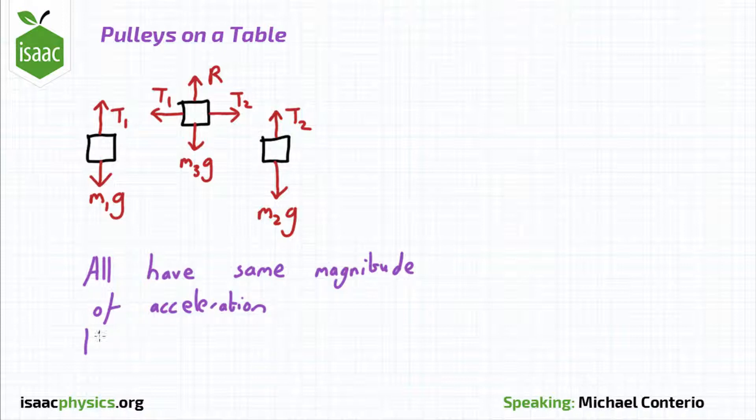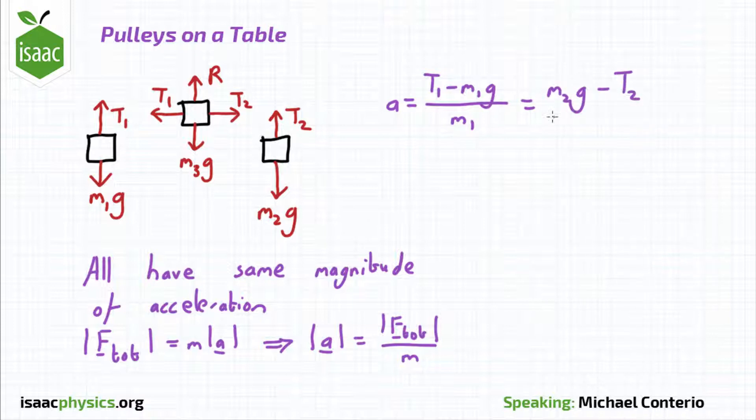So if we take Newton's second law, force equals mass times acceleration, and just take the magnitude of the resultant force and the magnitude of the final acceleration and rearrange it, we can then look at this for each individual particle and compare those.